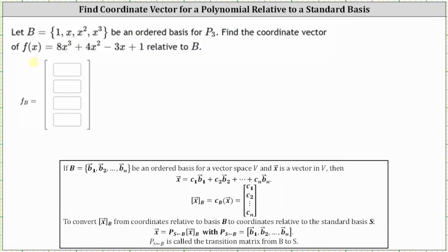So let's first rewrite the order of the function f(x). Let's write f(x) = 1 - 3x + 4x² + 8x³.